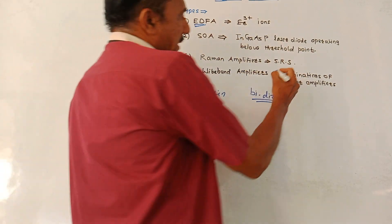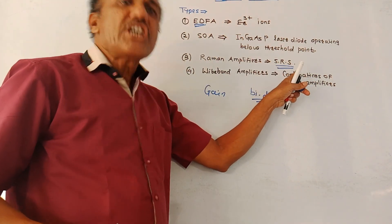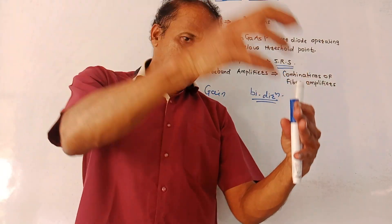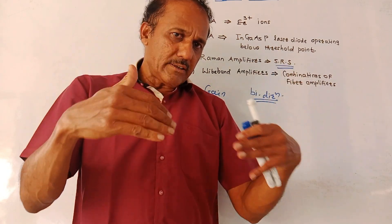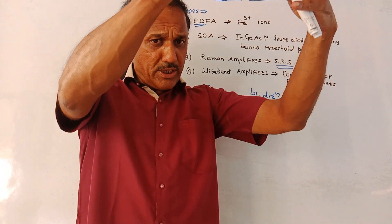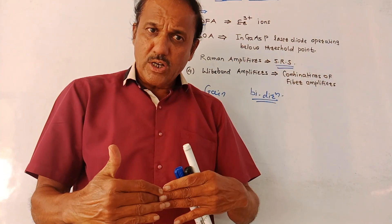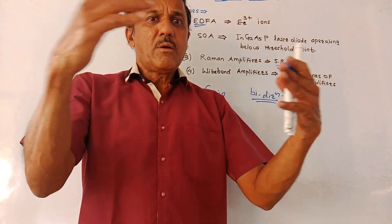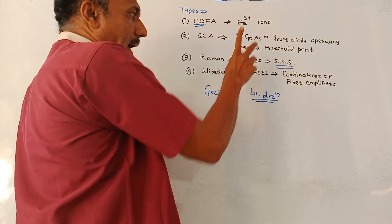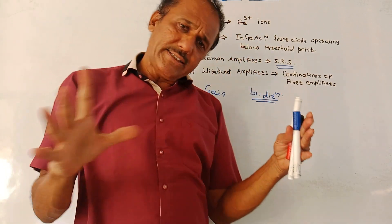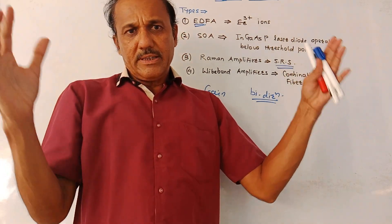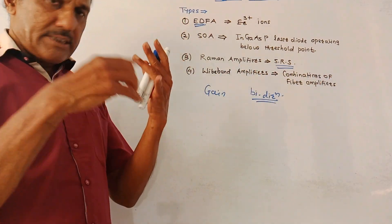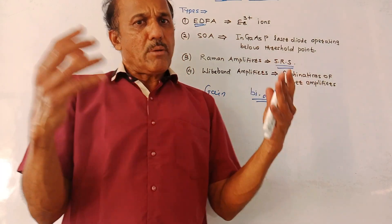Next is the Raman amplifier, which makes use of the stimulated Raman scattering effect. Atoms are normally at the ground state; when external energy is applied, they get excited to a higher energy level. When they fall back to the ground state, they give out energy, producing a stimulated action that causes amplification. The fourth type is the wideband amplifier — if you want wideband amplification, different types of amplifiers can be connected in series, in parallel, or in both series and parallel configurations.